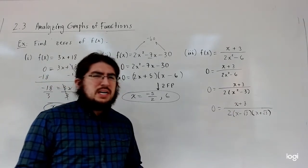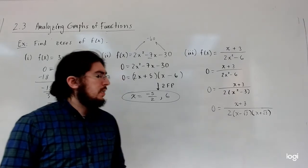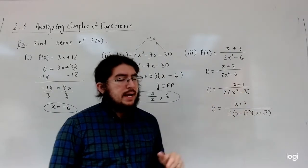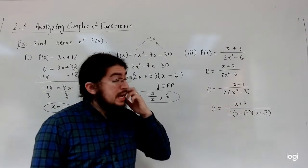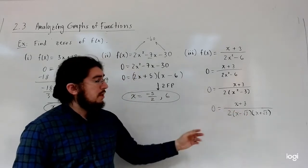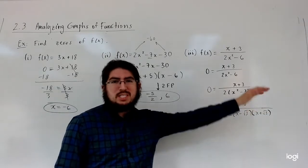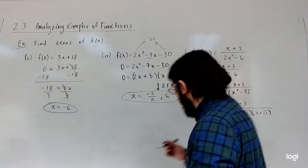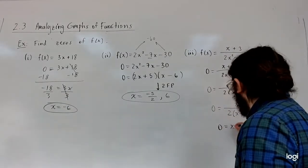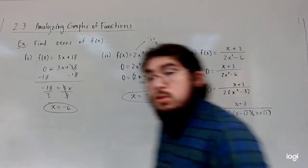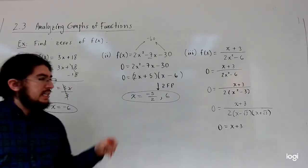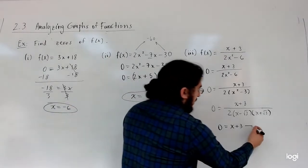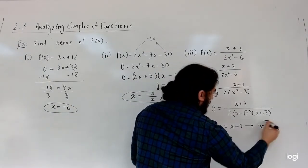But notice: a fraction is zero not when the bottom is zero — it's undefined when the bottom is zero. A fraction is zero when the top is zero. You can see this by cross-multiplying. So we set x plus 3 equal to zero, and subtracting 3 gives us x equals negative 3. So that's our zero.